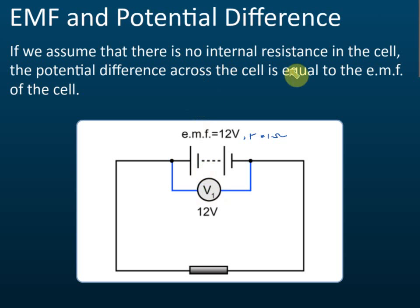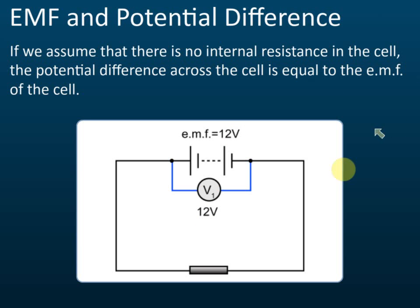If the internal resistance is given, then the EMF is not equal to the potential difference. But if there is no internal resistance, then the EMF is equal to the potential difference — you can treat them as the same. If the question does not mention internal resistance, you can assume it is zero, meaning the electromotive force equals the potential difference. So if EMF is 12 volts, the potential difference is also 12 volts.